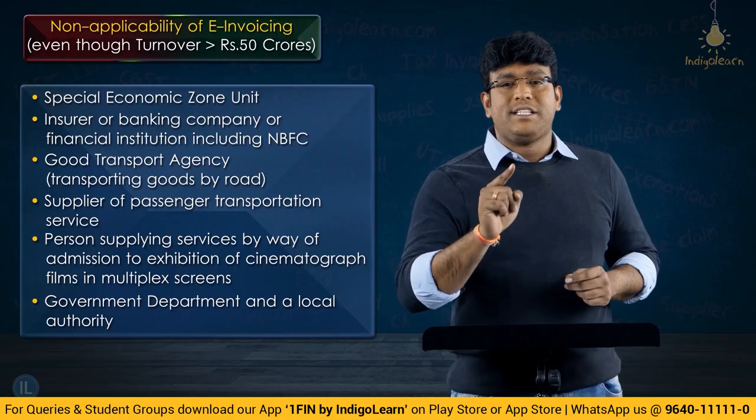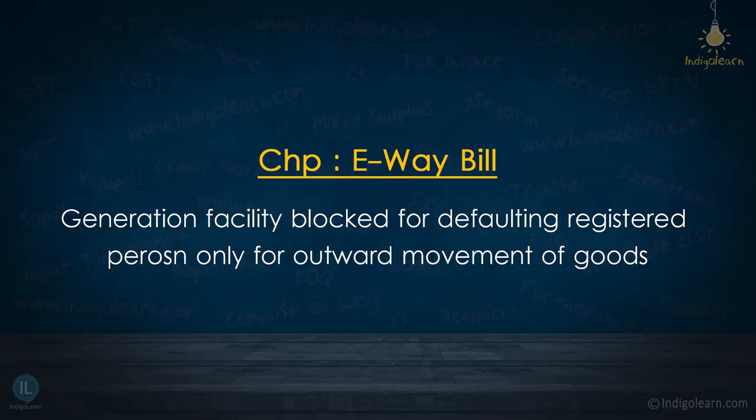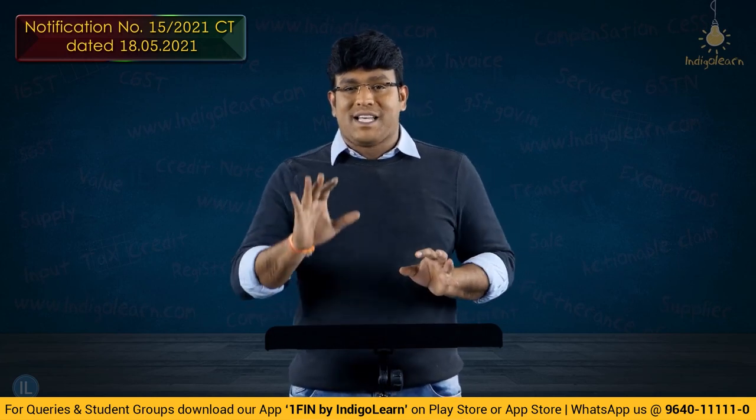Next amendment is in relation to the topic of e-way bill. An interesting amendment has come up by Notification No. 15/2021 dated 18th May 2021. As per Rule 138E, if any person fails to furnish return for a continuous period of two months, then the facility for generation of e-way bill is blocked, either as a consignor or as a consignee.